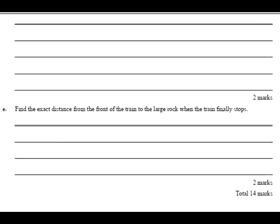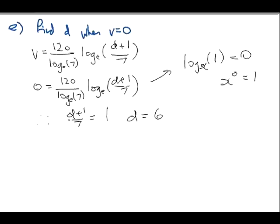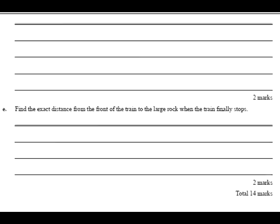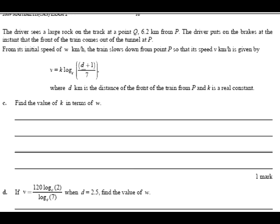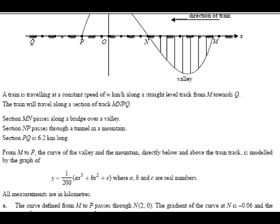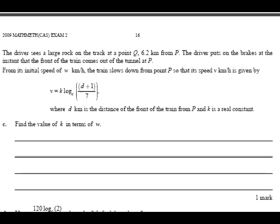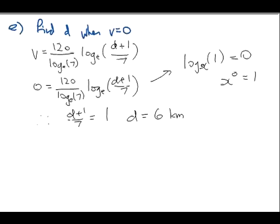What do we want? Exact distance from the front of the train to the large rock when the train finally stops. The first thing to realize is that D is in kilometers. The second thing to realize is that D is not your final answer. Look back. So, train stops at D equals 6. Right? Look back to the top. Sorry, not the top. Quiet. Okay. Look back here. You see that the driver has a large rock. How far along? 6.2 kilometers from P.